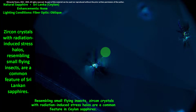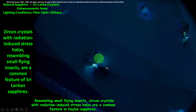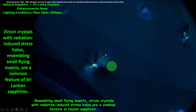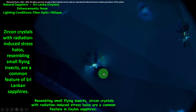Now we are moving here. The lighting condition is fiber optic oblique. Look at these places — these are very special things we can find inside small sapphires. They look like small flying insects. These are zircon crystals inside the sapphire. The zircon crystal shows us radiation-induced stress halos around it, resembling small flying insects.